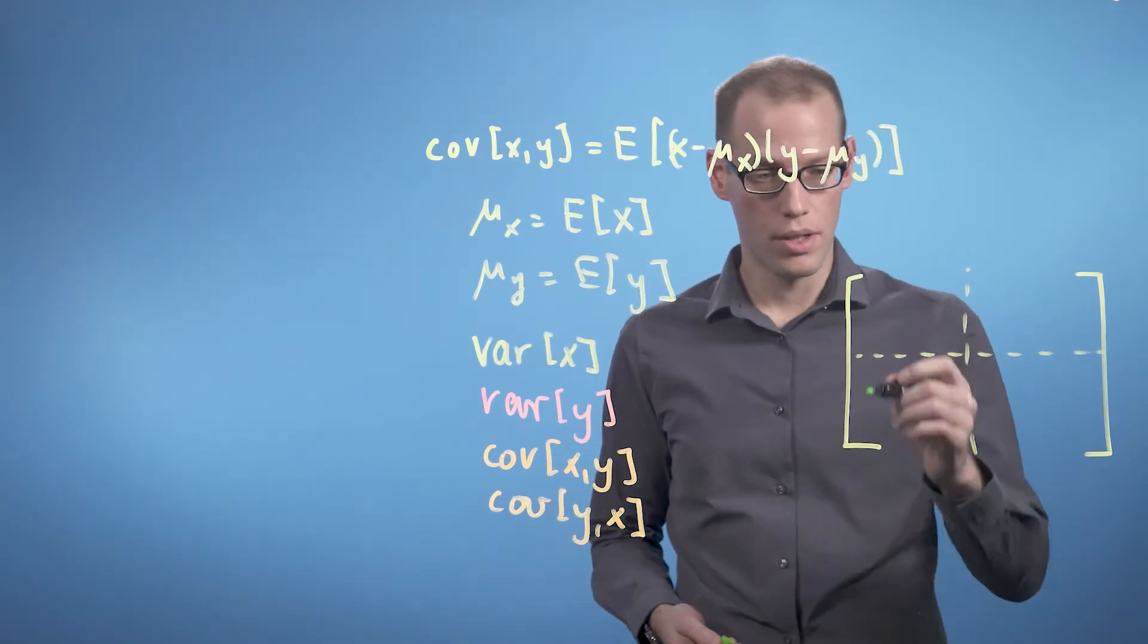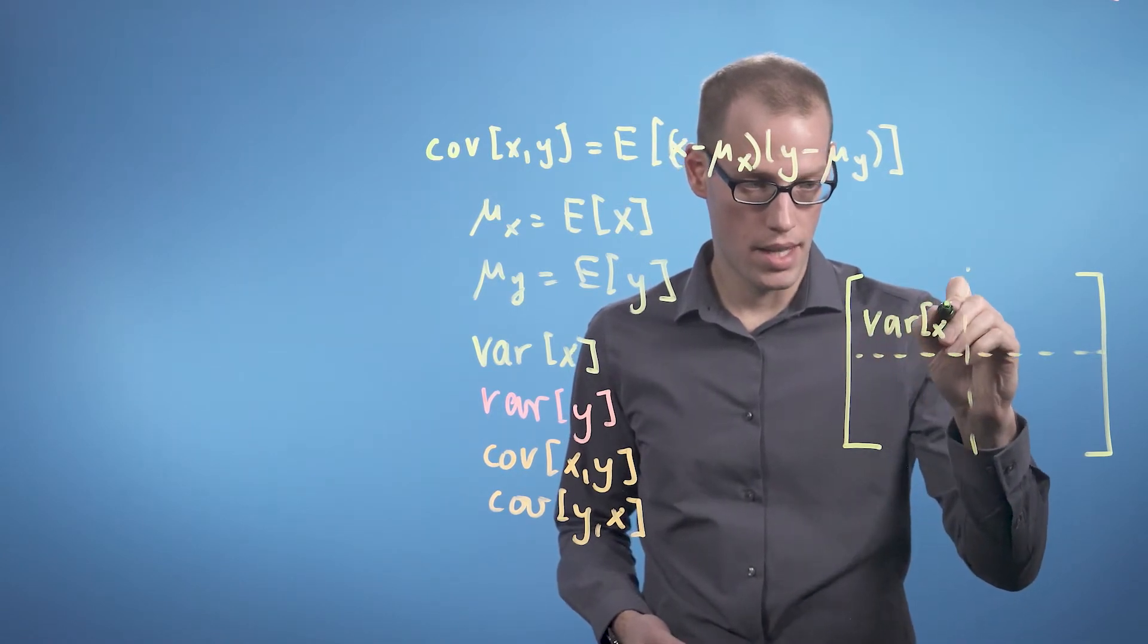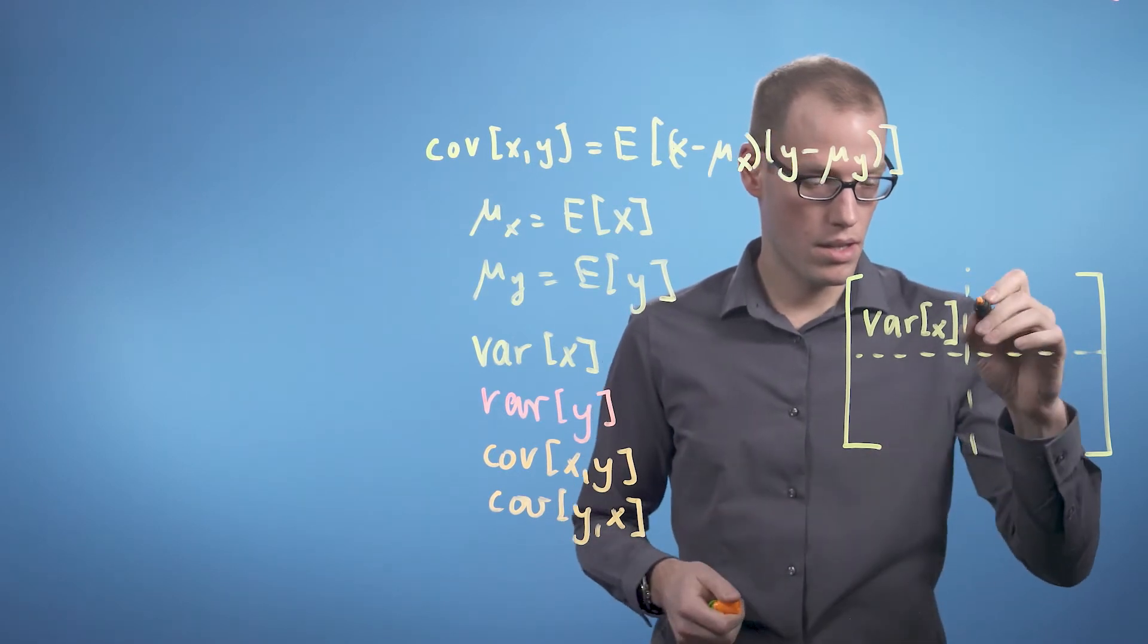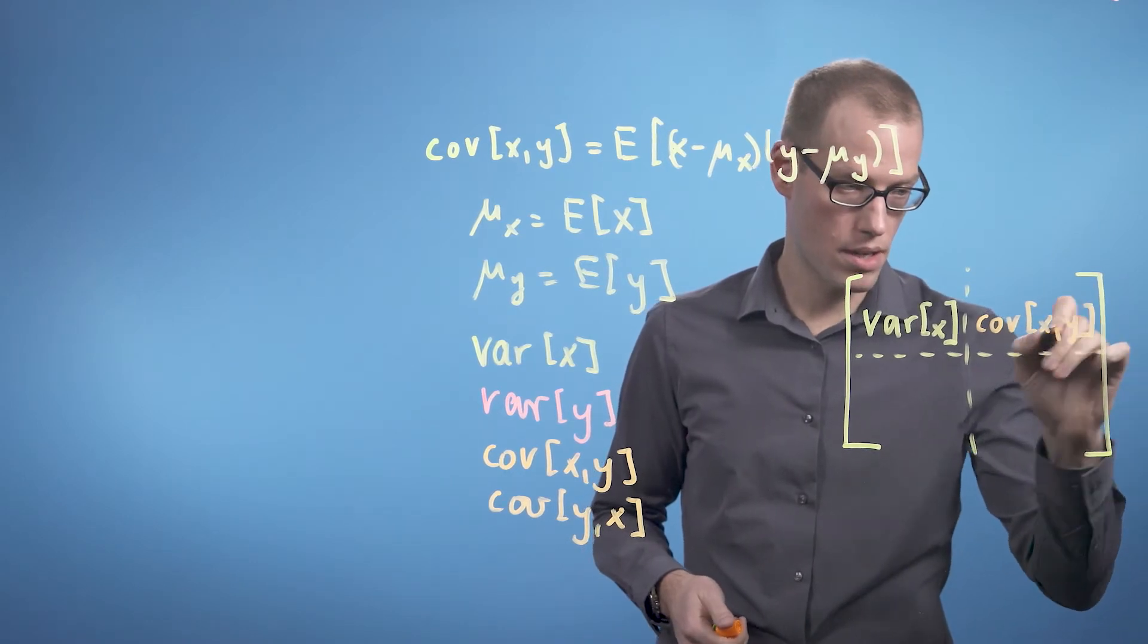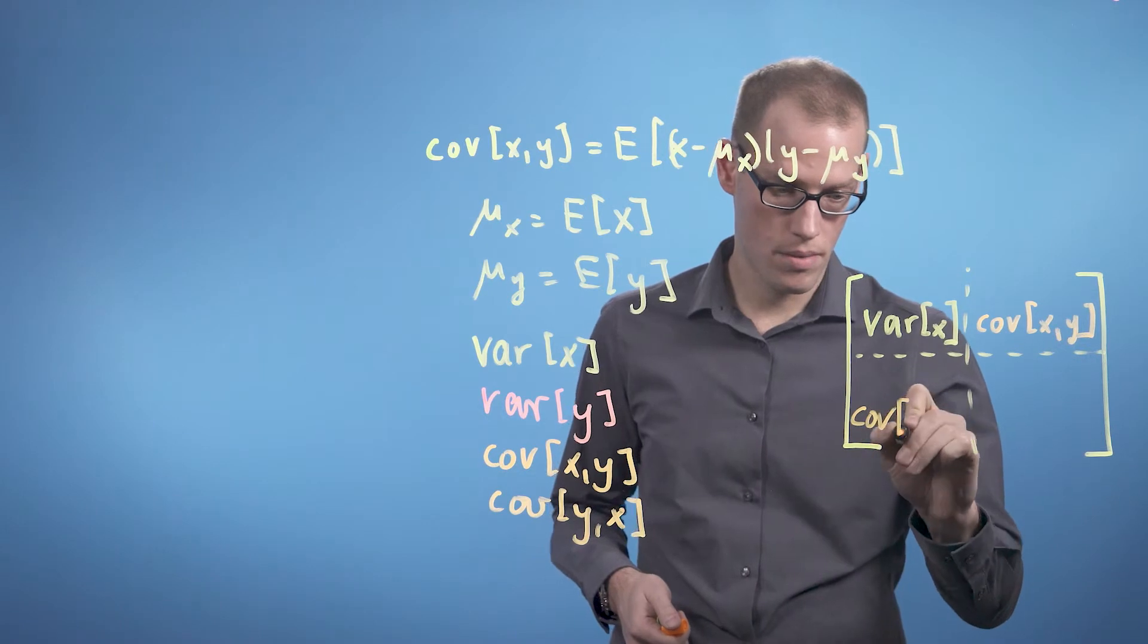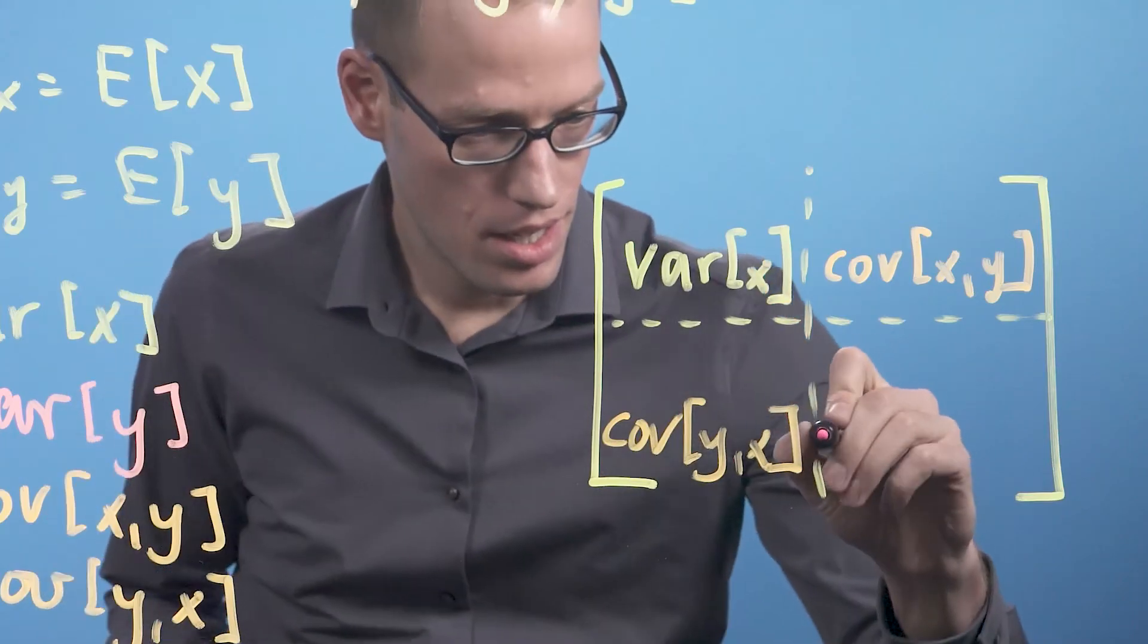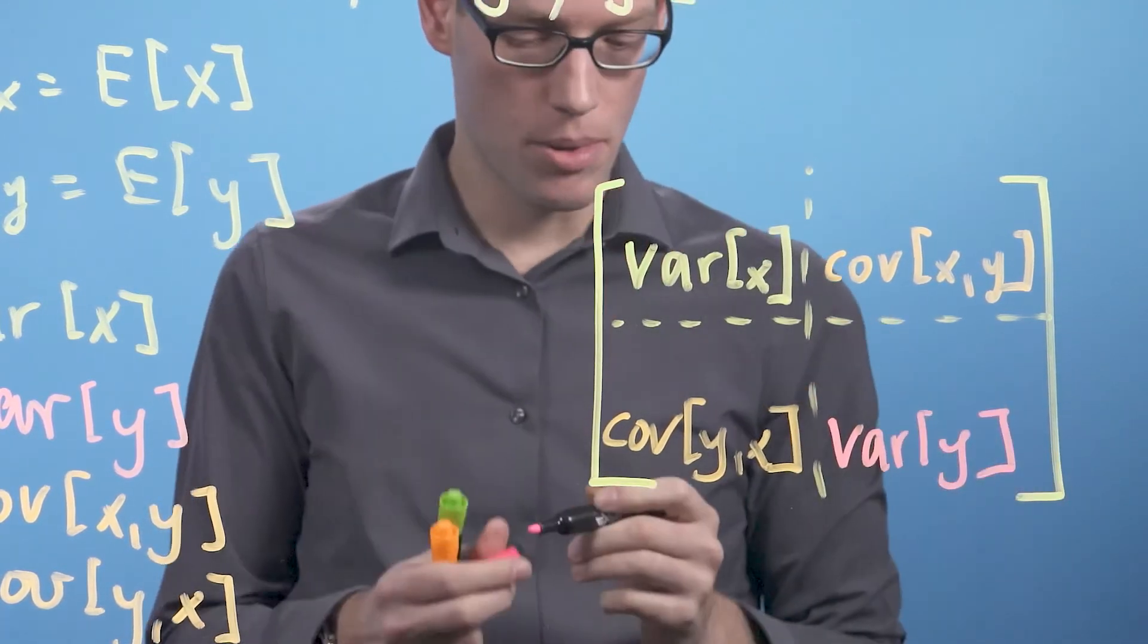In the top left corner, we have the variance in the x-direction. Then we get the covariance term between x and y in the top right corner, the covariance between y and x in the bottom left corner, and the variance of y in the bottom right corner.